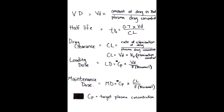What is the equation of half-life? The equation of half-life is 0.7 times volume of distribution over clearance.